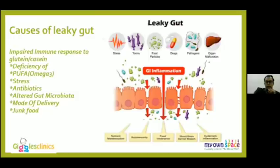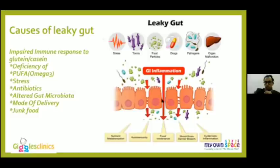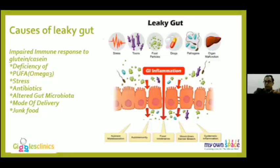The leaky gut involves a breach in the mucosal lining of the intestine. Normally, these mucosal linings are tightly interconnected, preventing toxins from escaping. In children on the spectrum, gaps in this barrier allow waste products and toxins to be released into the bloodstream — toxins that are normally present in everyone, but are contained by an intact gut barrier.